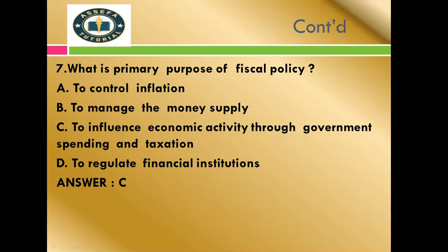Question number seven: What is the primary purpose of fiscal policy? To influence economic activity through government spending and taxation. The correct answer for question number seven is C.